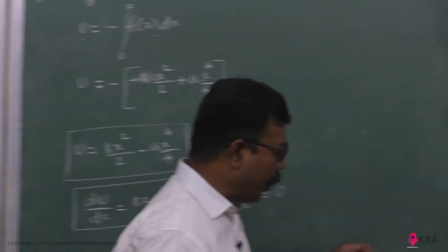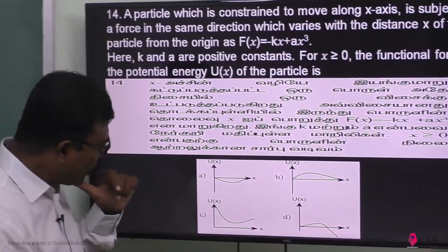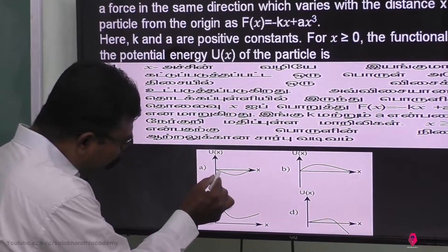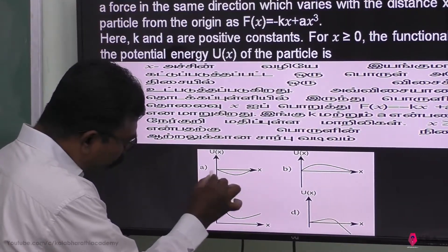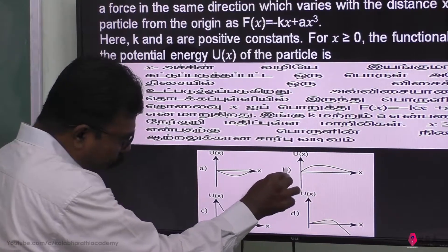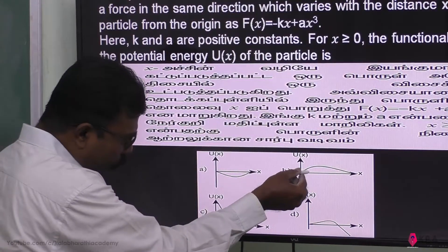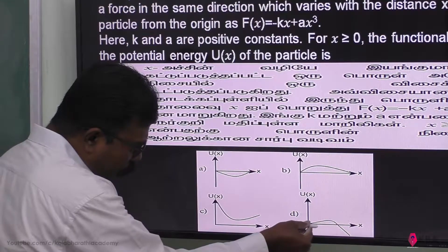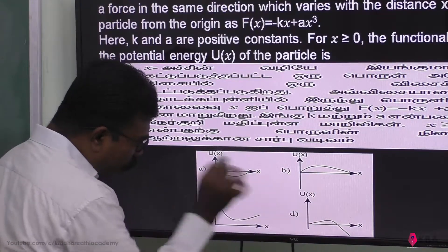So first, for this curve the slope must be 0. If the curve goes like this, the slope is 0 here. This slope is 0, this slope is 0, this slope is 0, so three slopes are 0.